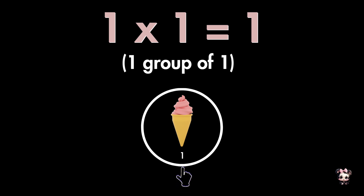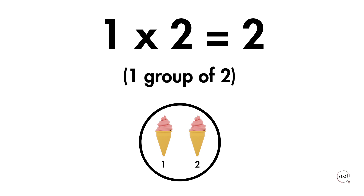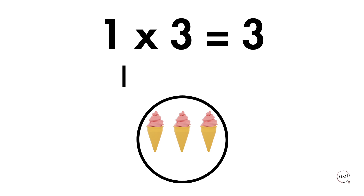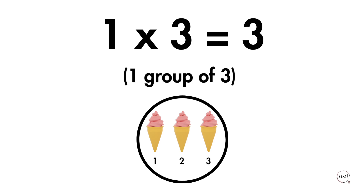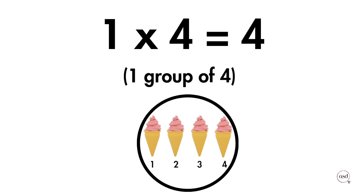1 group of 2 ice creams is 2. 1 group of 3 is 3.